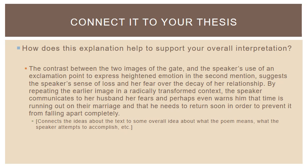Part of the explanation is then to connect it to our overall thesis — whatever our overall interpretation of the poem is that you're trying to advance. I know we've sort of skipped that step and gone straight to the analysis without talking about the overall thesis, but that's just for the purposes of this illustration. We talk about forming theses in a different lecture. For our purposes here, let's assume we have some thesis already that we're trying to put forward. So connecting what we've already unpacked — these ideas about the gates, their contrast, the different ideas they express — what does that tell us about what the poem means, what the speaker is trying to do?